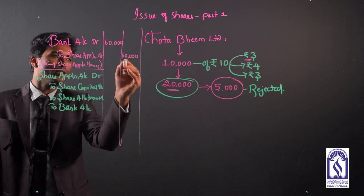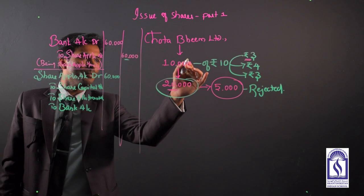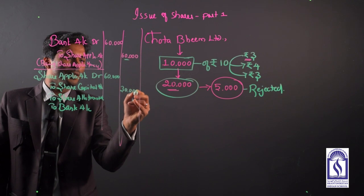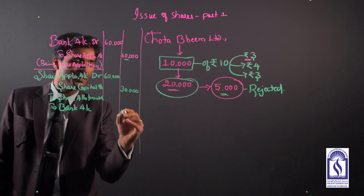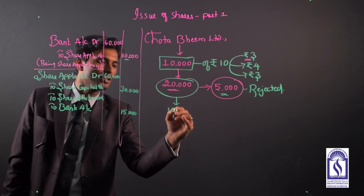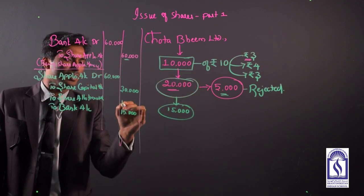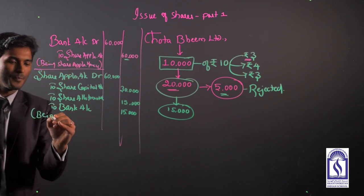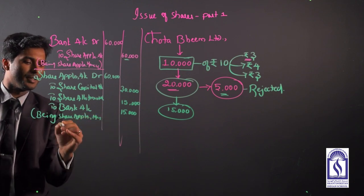So this 60,000 which we have should be debited and remaining to share capital account. Since the company has issued only 10,000 shares of rupees 3, 30,000 shall be sent to share capital account. Now 5,000 that we have rejected into 3, 15,000 to be sent to the bank and the remaining 5,000 is extra. So right now the shares which are available in the business is only 15,000. So 15,000 into 3 moves to share allotment, being share capital share application money adjusted.